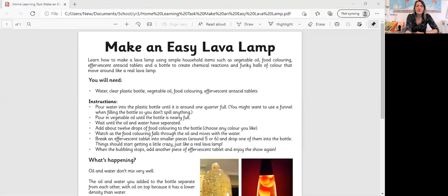Now in your home learning pack, you should be able to see a sheet that looks like this. I'm just going to share that with you so you can see what I'm looking at. So it's the one that says make an easy lava lamp at the top. And it has all the instructions there for you and the things that you'll need, but I'm just going to go through it with you so that you can see what it looks like.